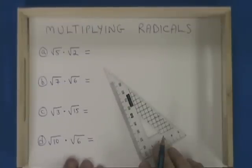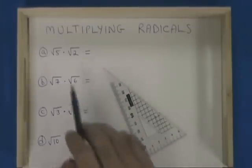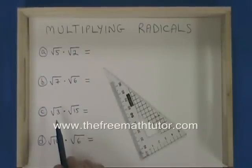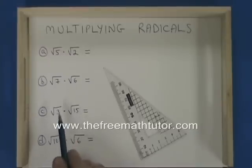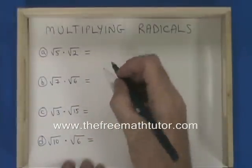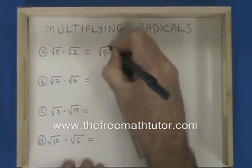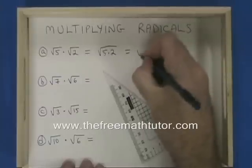This video will illustrate how to multiply radicals. When you have root 5 times root 2, you can combine them into a single term just by multiplying the contents of the two radicals. Root 5 times root 2 is equal to the square root of 5 times 2, which is the square root of 10.